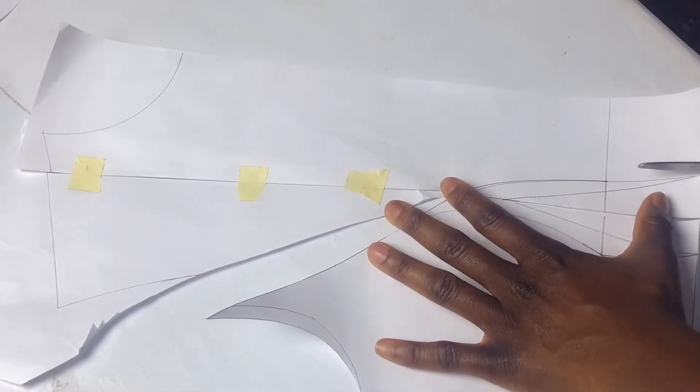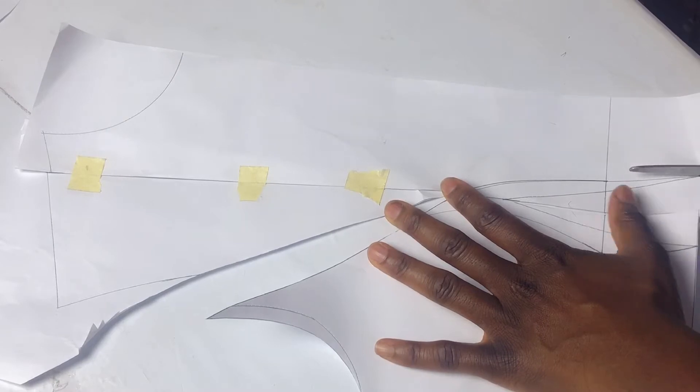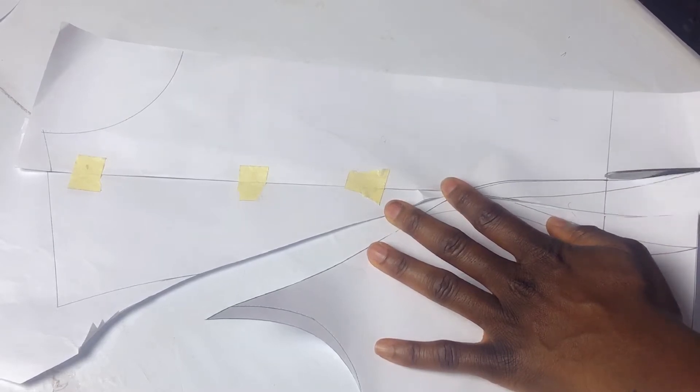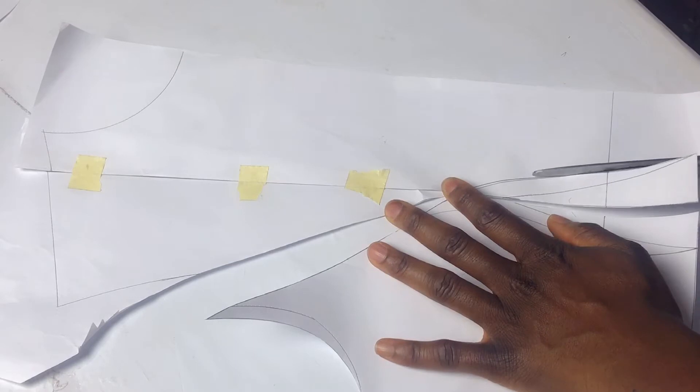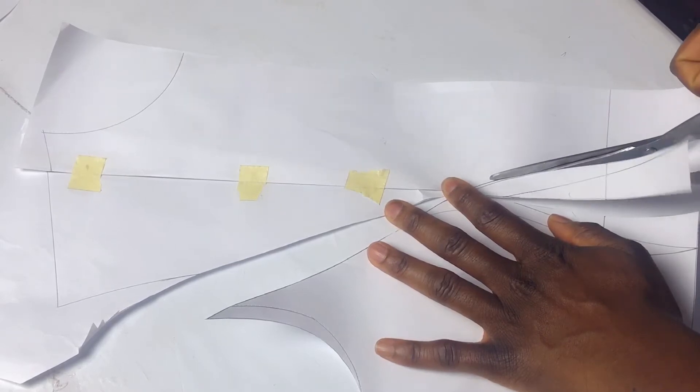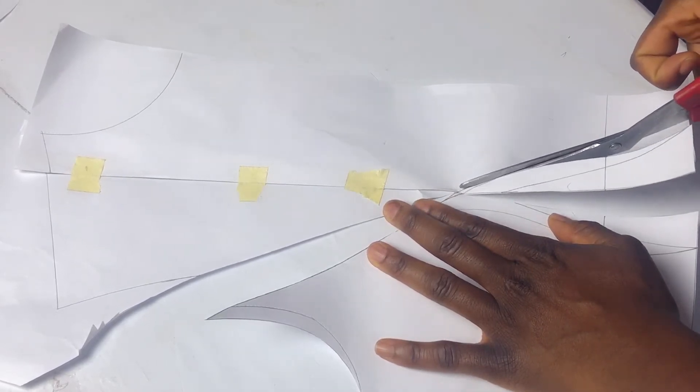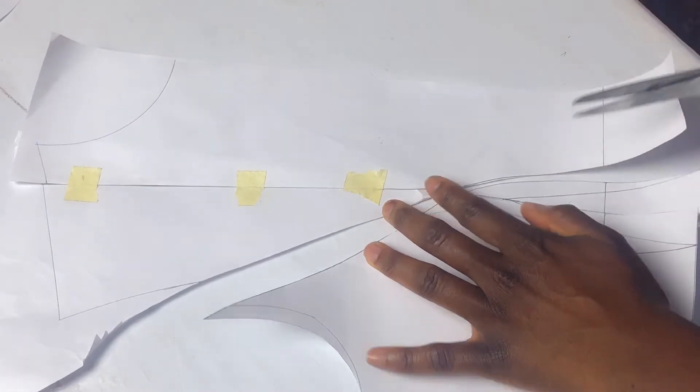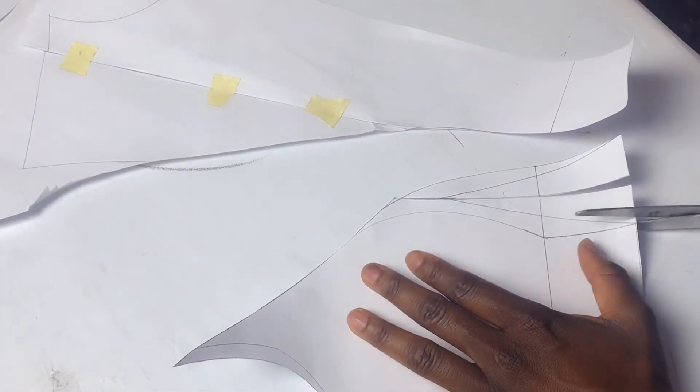With the shoulder dart closed, the next thing is to cut up my pieces and I indicate which part will be the part you are cutting on fold and the part that you are cutting two pieces of.